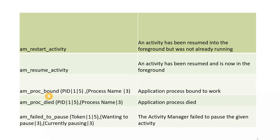`am_proc_bound` — application process bound to work. `am_proc_died` — it's easily understood, the application process has died. So whenever an app is killed or an app has died, this log will be logged in your event logs. Android system will log this particular line in the event log along with the process ID and process name of which application has been killed.